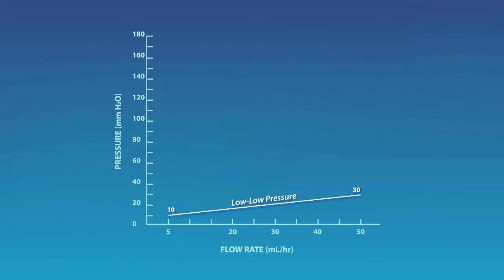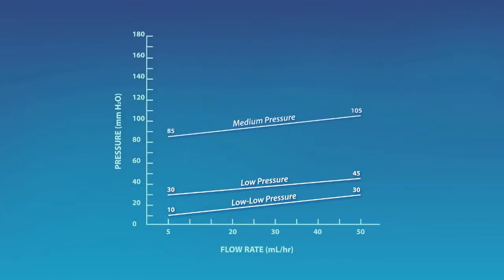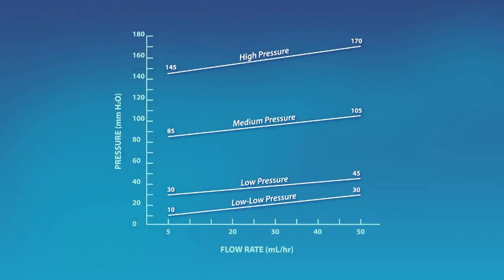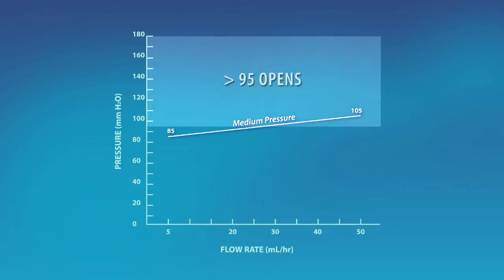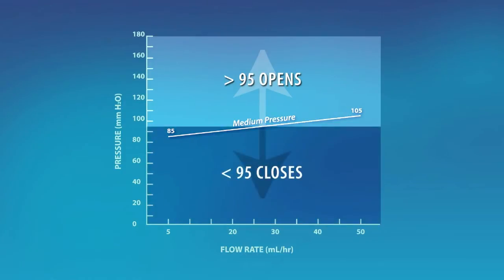The pressure flow graph shows the threshold at which the membrane will open for each pressure level at various flow rates. These levels are determined by the midpoint on the pressure level range at the typical CSF production rate of 20 to 25 milliliters per hour. For example, if a surgeon is using a medium pressure valve at an average flow rate of 25 milliliters per hour, the valve will have a nominal resistance of 95 millimeters H2O. Therefore, when the ICP is above 95 millimeters H2O, the valve opens and drains. When the ICP is lower than 95 millimeters H2O, the valve closes.